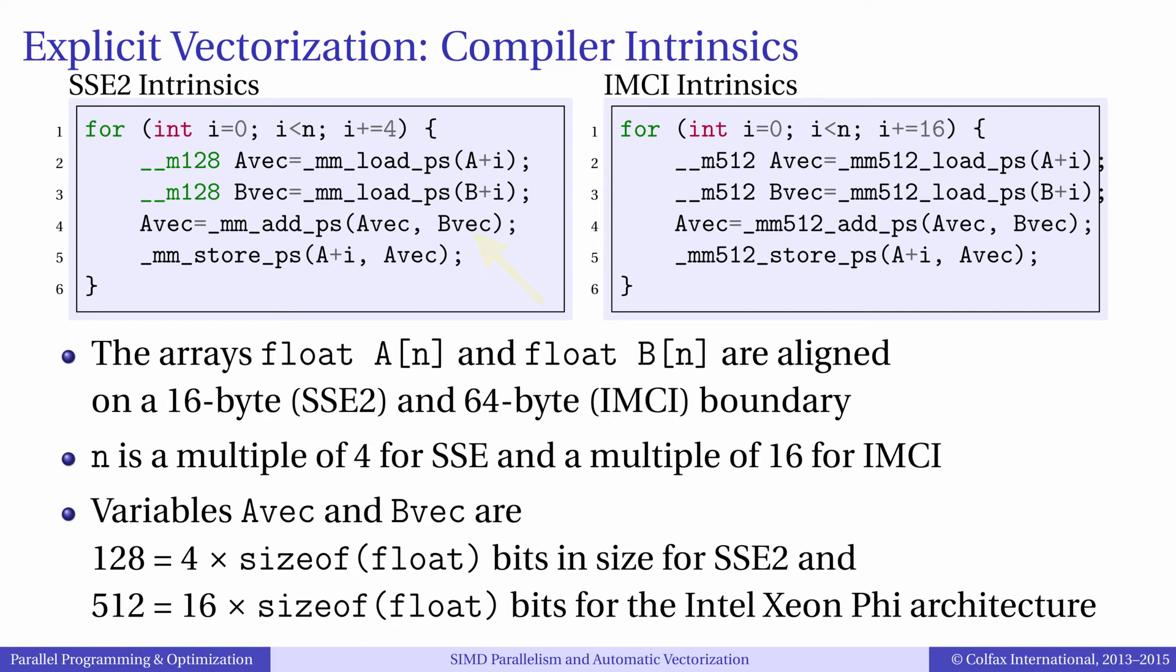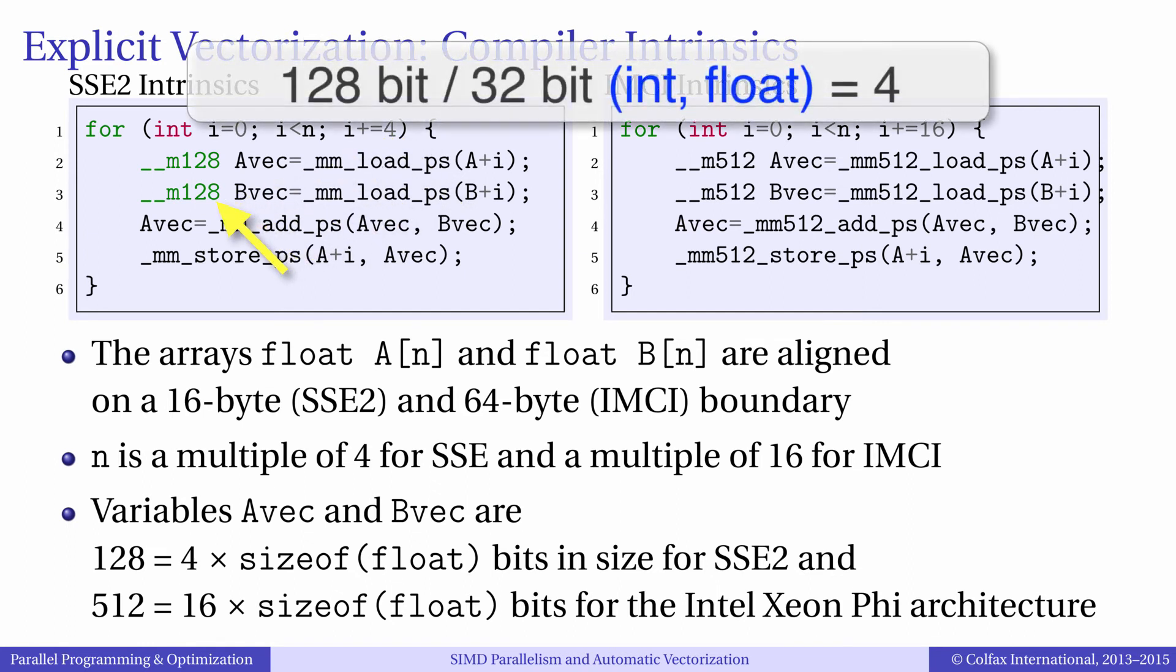The listing on the left adds array B to array A element by element and uses SSE 4.2 instructions for that. The workflow of this calculation has three stages. First we need to load data from the main memory into special variables that represent vector registers. Second we call a vector add instruction on the two registers. Third we store the contents of the resulting vector register back into memory. As you can see, the stride in the loop is four because SSE 4.2 vectors are 128-bit wide, which packs four single precision floating point numbers.